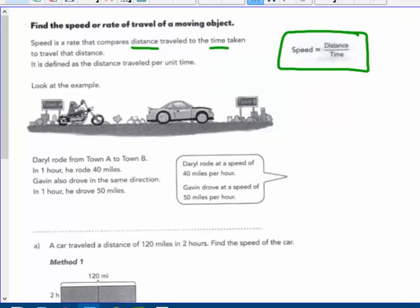So Daryl drove 40 miles per hour and Gavin drove 50 miles per hour. I'm sure you're all familiar when you're in the car driving with someone. Of course you're not driving.